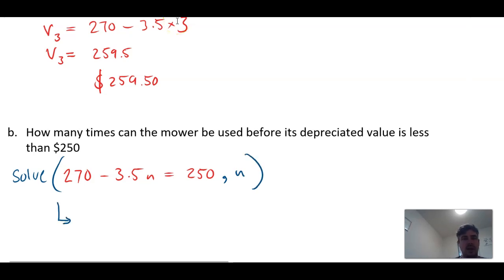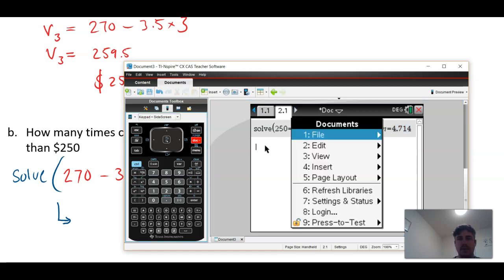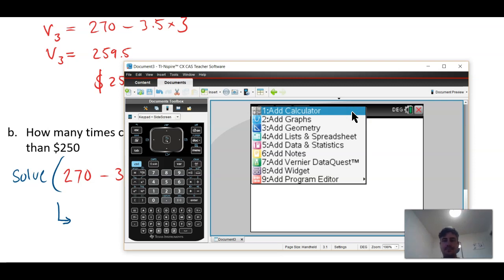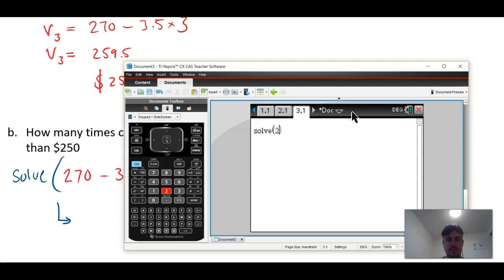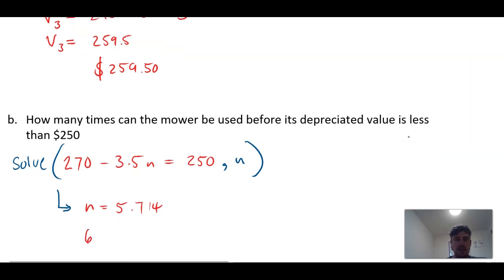So if I type that in the calculator, solve 270 minus 3.5n equals 250 for n. And it comes up as 5.714 times. So n equals 5.714. Go back to the question: how many times must the mower be used before it goes less than that? So it must be used 6 times, because if you used it 5 times, it would not be lower than that.